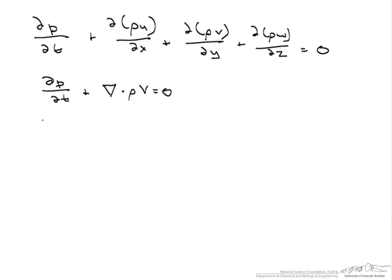Let's suppose we have a steady flow. Then this reduces to del·(rho*v) = 0, since there is no time dependence.